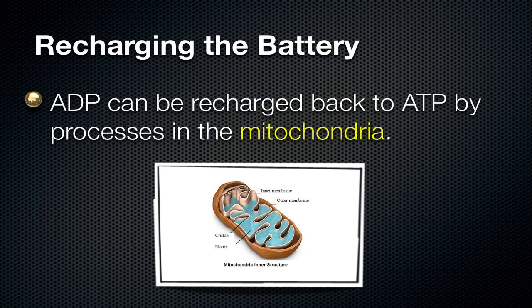Just like rechargeable batteries — when you use them and they die out, you put them in the charger and recharge them so they can be used again. The same thing happens with ATP. When ATP is used it becomes ADP — adenosine diphosphate — and then to recharge it we have to make it back into ATP. This happens in the mitochondria. The mitochondria recharges ADP back to ATP so it can be used again. That's why the mitochondria was involved in energy production back in chapter 7.